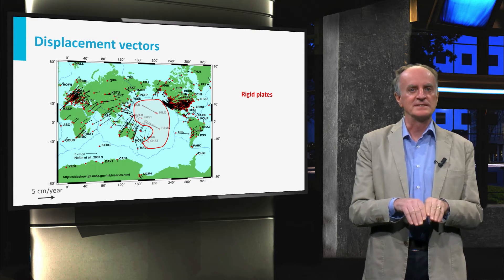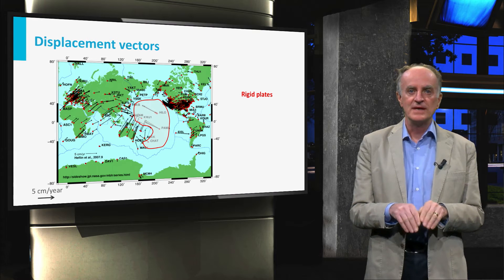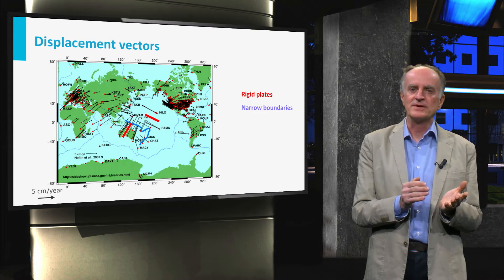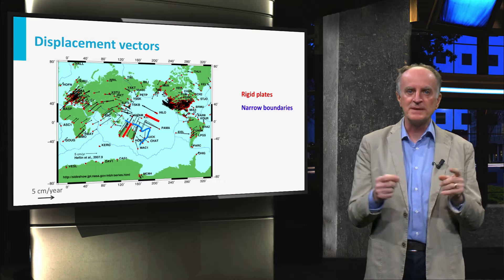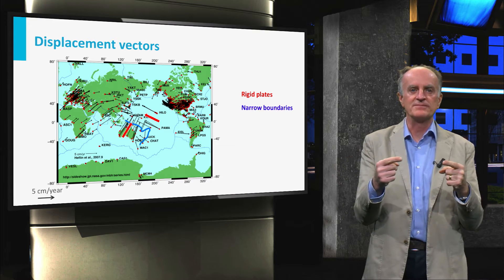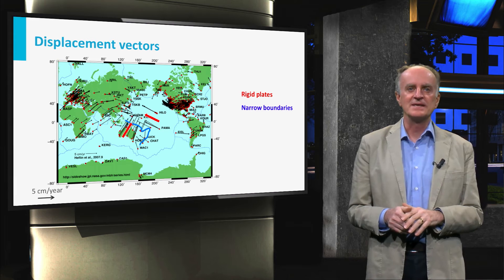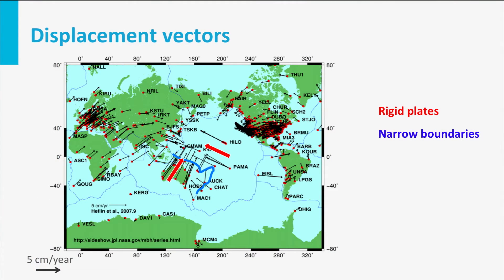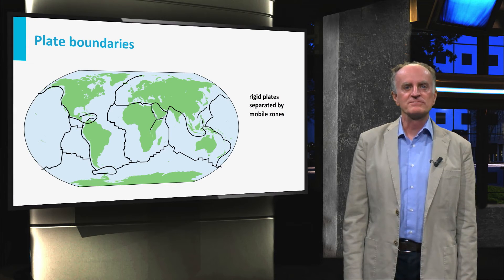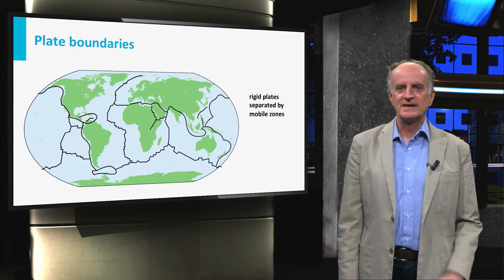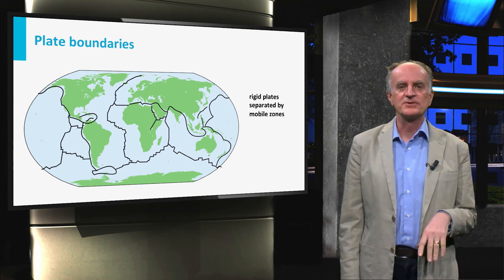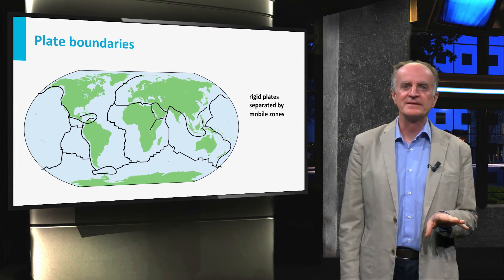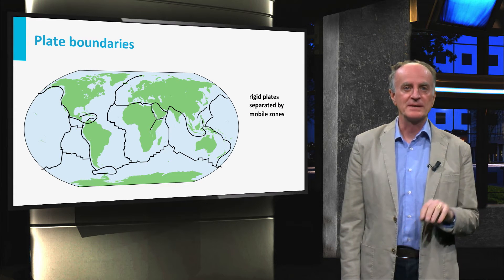This is the case, for instance, of the Pacific domain. If you move towards the west into the Australia region, you see that the displacement vectors are very different. The earth is then subdivided in rigid regions, with little movement between one point and the other, separated by narrow domains across which vectors are very different. On the base of GPS movements, we can subdivide the surface of the earth in roughly 12 major domains, with little relative movements, called tectonic plates.